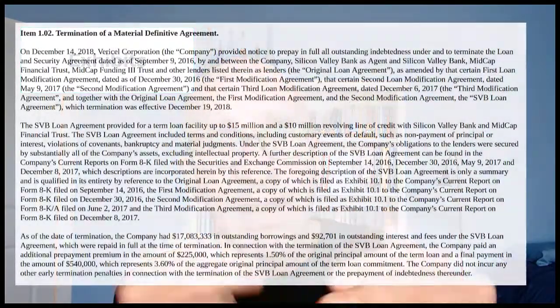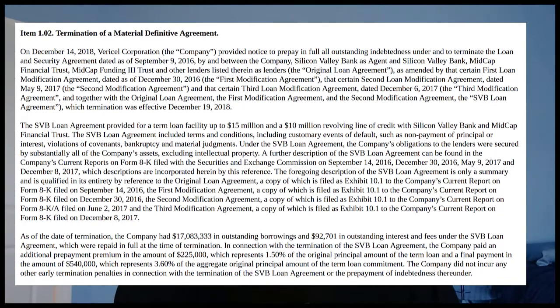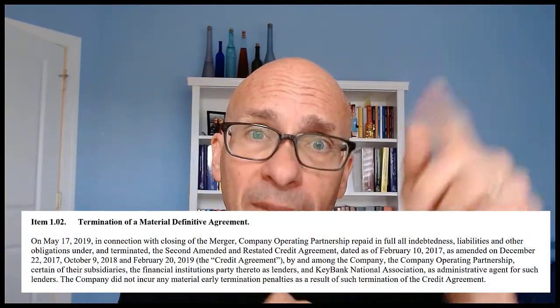The exhibits for this type of 8-K vary. They are filed under Item 9.01. The type of exhibit might be a material agreement under 601(b)(10) of Regulation S-K, it might be a press release filed as Exhibit 99, or it might be nothing — you might not have an exhibit to this type of 8-K.